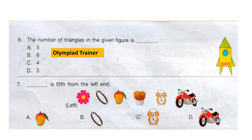Question 7: Dash is fifth from the left end. Left is indicated — that is the left end. Start counting from the left end to find out which item is fifth. The correct answer is option C: the alarm clock.